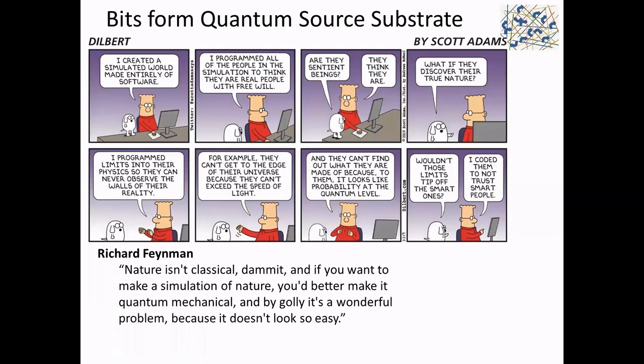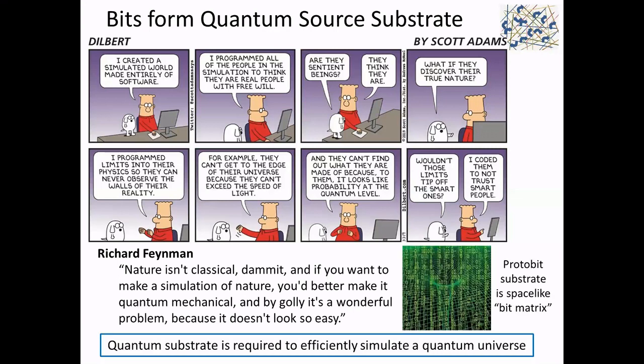I love this cartoon to start with for a group interested in simulation. Dilbert says he created a simulated world made entirely of software with people programmed to think they're real with free will. He programs limits into their physics so they can never observe the walls of their reality — they can't exceed the speed of light and at the quantum level it looks like probability. This is funny because Feynman says nature isn't classical, it's quantum mechanical — so any simulation better be quantum mechanical.